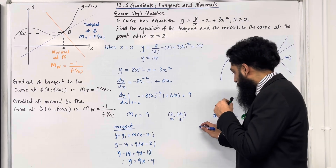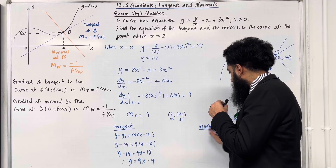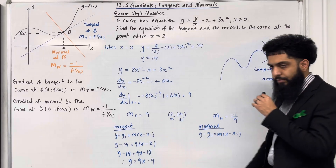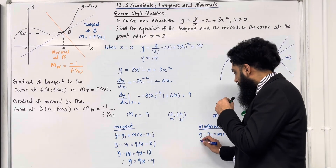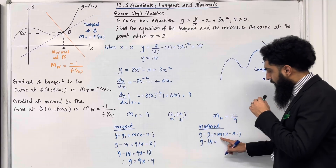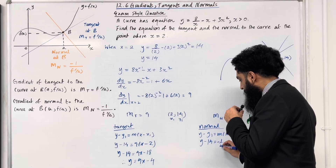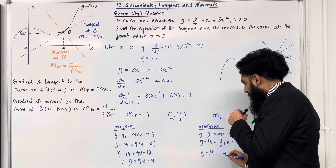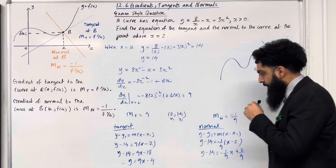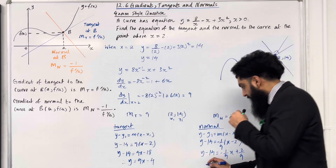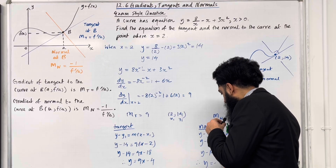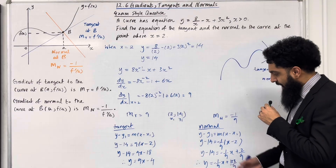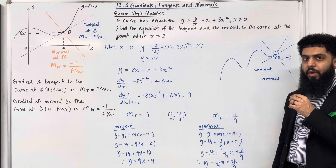Let's proceed forward and work out the equation of the normal. Again, we start with y minus y₁ equals m(x minus x₁). Substituting in: y minus 14 equals minus 1 over 9 times (x minus 2). So y minus 14 equals minus 1 over 9 x plus 2 over 9. Hence, making y the subject, we get y equals minus 1 over 9 x plus 128 over 9. That is the equation of the normal to the curve at the point where x is equal to 2.